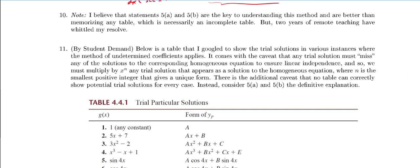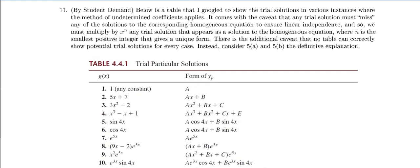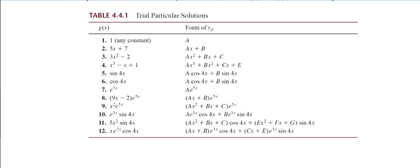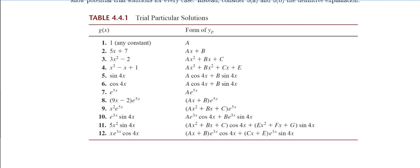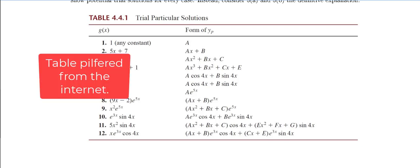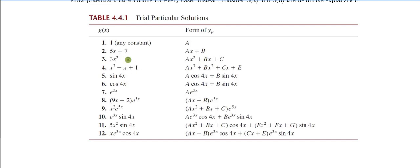Finally, over the last few years I've had people really want a table for this. I actually disagree with using a table for the method of undetermined coefficients, because no table is going to be complete — there's no way I could show you all examples where the method applies in any one table. It also doesn't take into account what to do when the trial solution already shows up as a solution to your homogeneous equation, which can give students a false sense of security. Nonetheless, some students have asked for it.